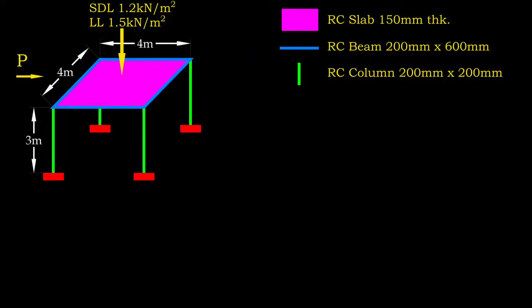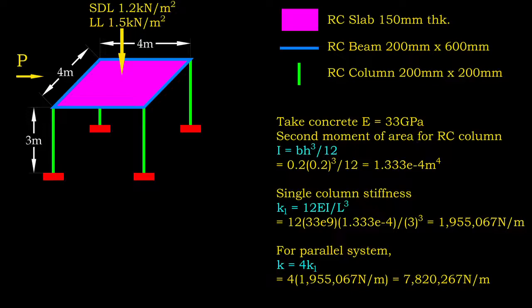Let's look into this example where a structure is loaded laterally. Under this condition, the columns will be deflected while the floor elements remain a rigid body. Thus, the stiffness of the structure is provided by these columns. All of these columns are supporting the floor. All of them are expected to share the same amount of force and exhibit the same deflection.